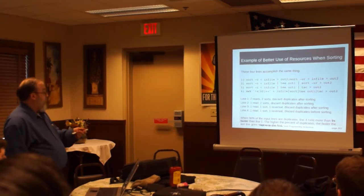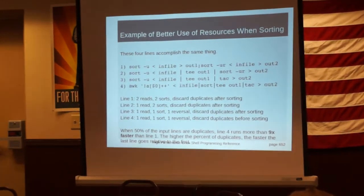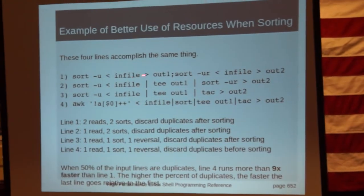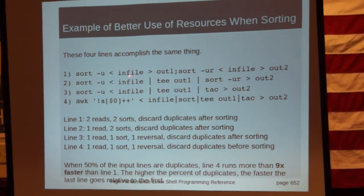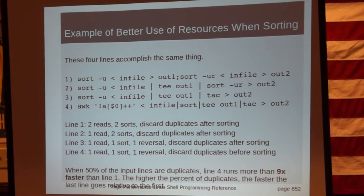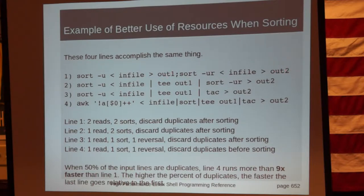Let's look at what we're doing here. These four lines do exactly the same thing but take a different approach. We're taking the data in this file, feeding it into the sort command. With this option, we're deleting any duplicate lines and redirecting it to a text file output. This second sort does the same thing, except with the reverse option it puts it in reverse order. So these two output files have the same data, but one is the reverse of the other.